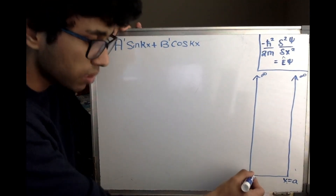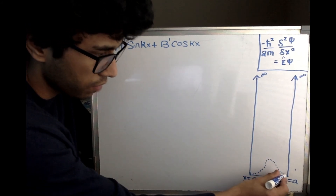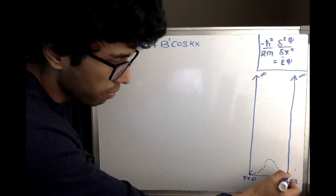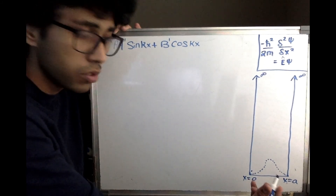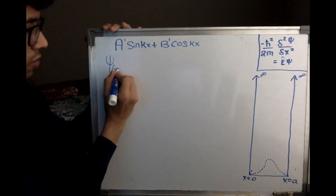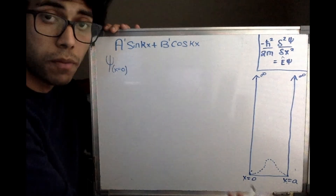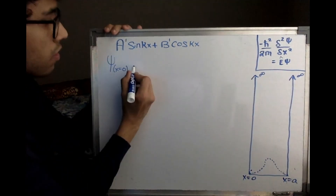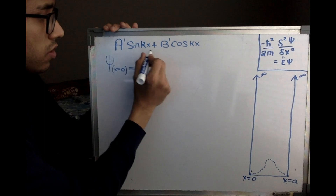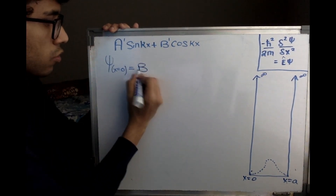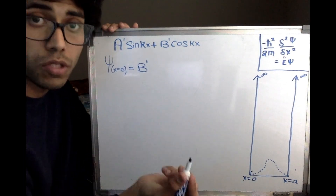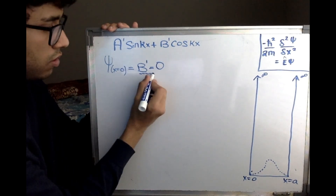Whenever you have a particle in a box, the probability function is more spread out in the center for the first energy eigenstate. We can assert that the particle has zero probability to be found at the boundaries. Let's evaluate the Schrödinger's equation at the boundaries since ψ = 0 there. At x = 0, ψ = 0. Plugging in x = 0, the sine term goes to zero and cosine of 0 equals 1, so we get B′ = 0. That is our first boundary condition result.